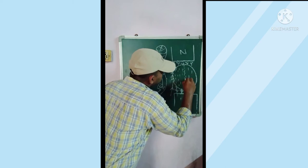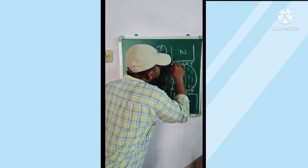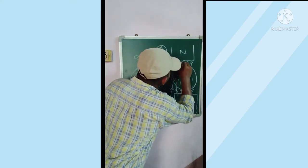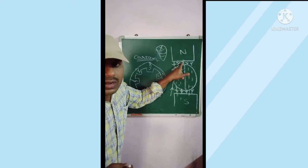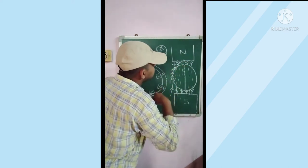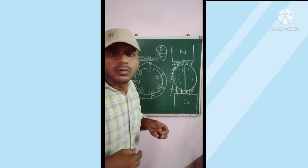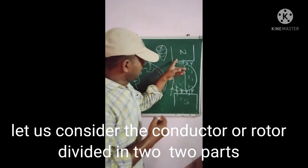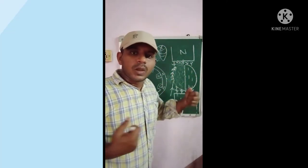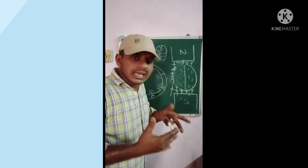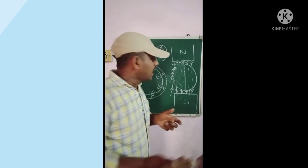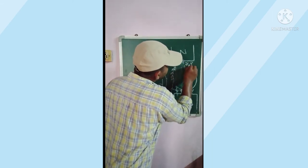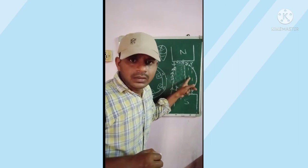If you observe the half part of the rotor, the main field flux direction and the rotor flux direction are the same and they collide with each other. The resultant flux will be colliding, so the total flux on that half of the rotor will be weakened — the resultant flux weakens on the half side of the conductor. The remaining half part of the conductor — rotor — needs to be observed separately.